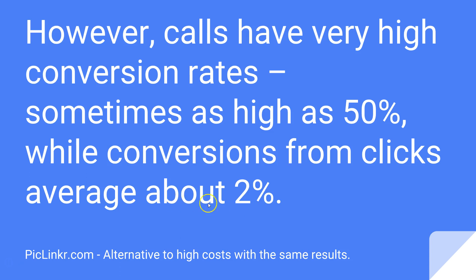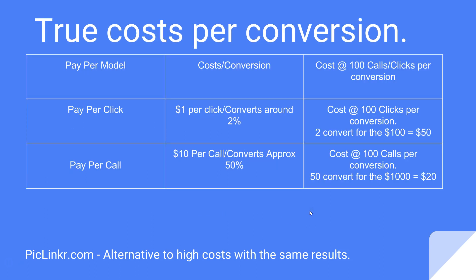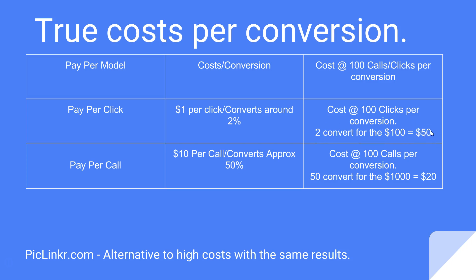What I have here is a table with the pay-per model, cost, conversion rate, and cost at 100 calls or clicks per conversion. For pay-per-click, it's one dollar per click and it converts around 2%. So for 100 clicks, the cost is $100. If only two people convert out of those 100 clicks, that's $50 per conversion.